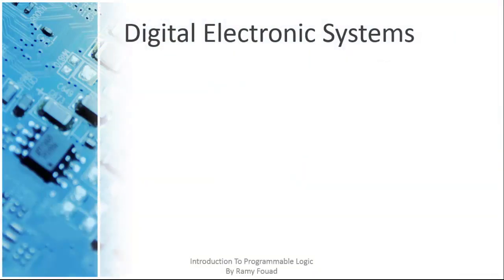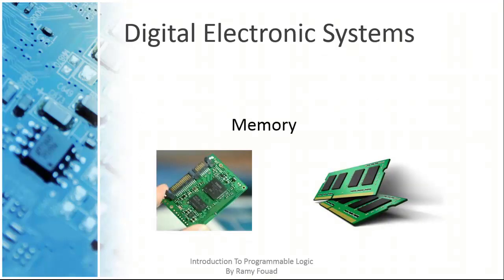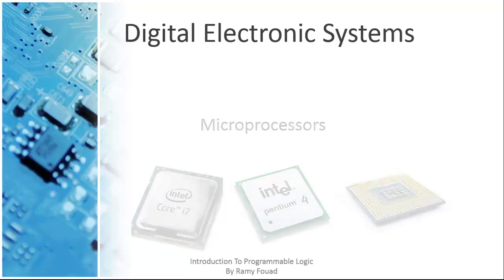In the world of digital electronic systems, there are three basic kinds of devices: memory, microprocessors, and logic. Memory devices store random information such as the contents of a spreadsheet or database. Microprocessors execute software instructions to perform a wide variety of tasks, such as running a word processing program or video game.